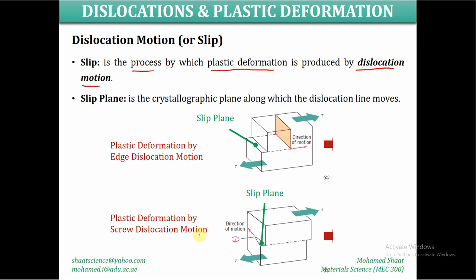In the process of plastic deformation, slip is the process by which plastic deformation is produced by dislocation motion. Slip describes the dislocation motion itself in order to achieve plastic deformation. Dislocations move over a plane called the slip plane. The slip plane is a crystallographic plane — as discussed in Chapter 3, in cubic crystals defined by three indices, in hexagonal crystals by four indices. The slip plane is the crystallographic plane along which the dislocation line moves.